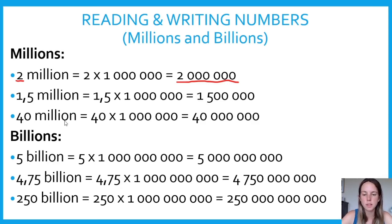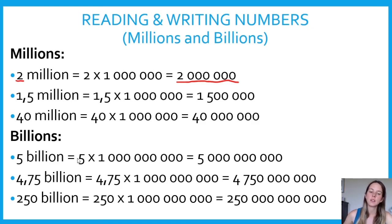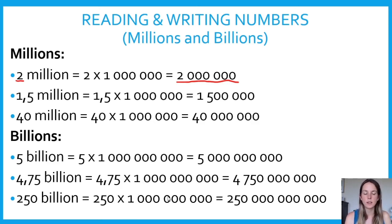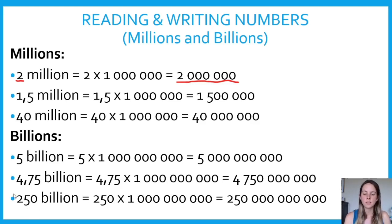Forty million, same process: 40 times 1 000 000 equals 40 000 000. Billions are a 1 followed by 9 zeros. So 5 billion written out is a 5 with 9 zeros. If I have 4.75 billion, that is 4.75 times 1 000 000 000, which gives 4 750 000 000. And 250 billion is 250 times 1 000 000 000, which gives 250 000 000 000.